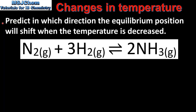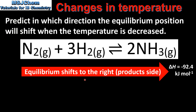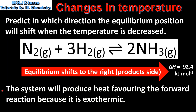When the temperature is decreased, the equilibrium position will shift to the right, which is the product side. The reason for this is that the system will produce heat, favouring the forward reaction because it is exothermic. Therefore the equilibrium position will shift in the exothermic direction, which is to the right.